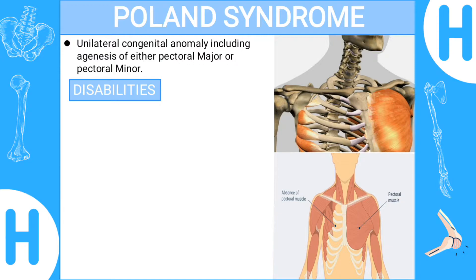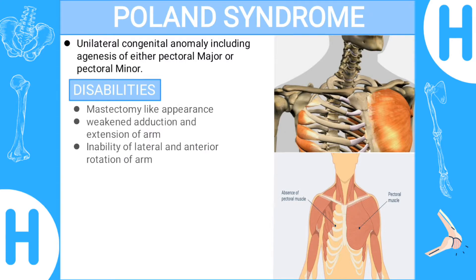Disabilities related to Poland Syndrome: the first one is a mastectomy-like appearance — females who have Poland Syndrome will have an extreme mastectomy-like appearance due to absence of pectoralis major and minor. Second is weakened adduction and extension of the arm, and third is inability of lateral and anterior rotations of the arm.